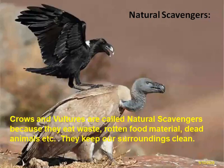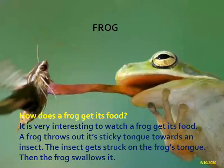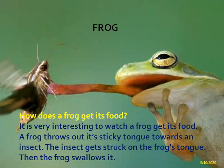What is this picture children? Vulture and crow — you can see these are both called natural scavengers. Why are they called natural scavengers? They eat waste and rotten food materials like dead animals, so they keep our surroundings clean. The frog has a long sticky tongue — it is very interesting to observe. Whenever it spots an insect, it throws out its sticky tongue and the insect gets stuck on it. Then the frog swallows it. In this way the frog catches insects.